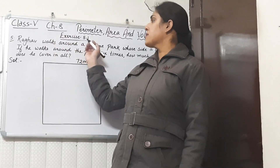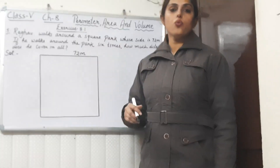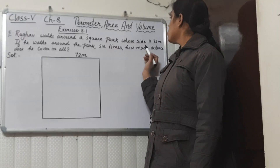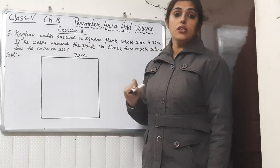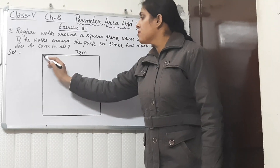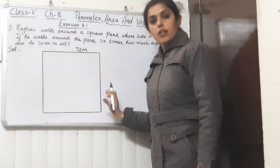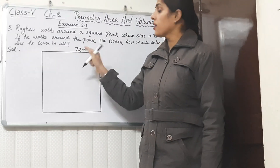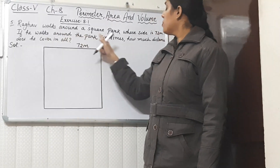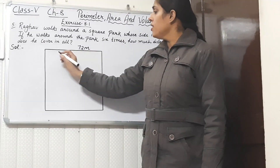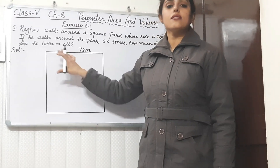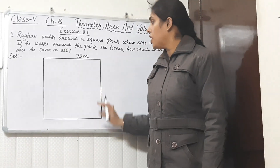Let's start question number five of exercise 8.1. The question is: Raghav walks around a square park whose side is 72 meters. This is a square park and Raghav is walking around it. The length of the side of the park is 72 meters. If he walks around the park six times, he is taking six rounds of this park.